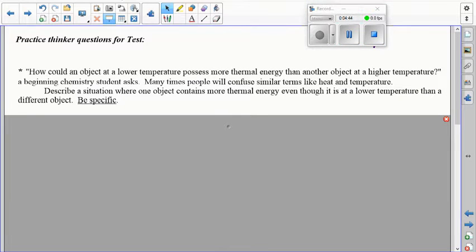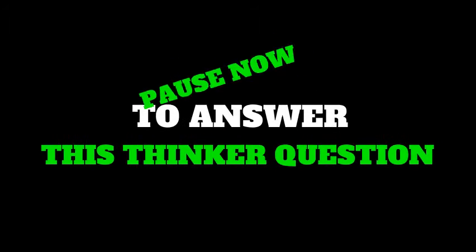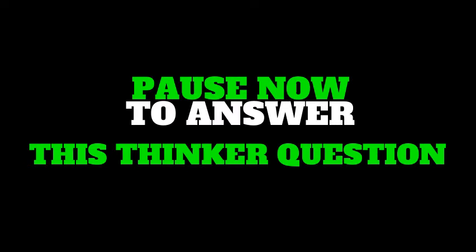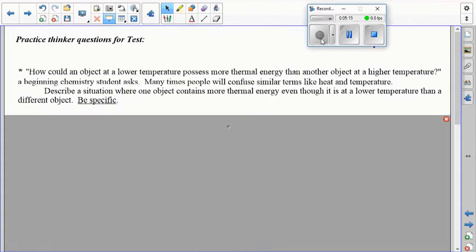A new chemistry student is like, how can an object at a lower temperature possess more thermal energy than an object at a higher temperature? Many times people confuse similar terms like heat and temperature. You very well may have been this person a few weeks ago when we started this unit. Describe a situation where one object contains more thermal energy even though it's at a lower temperature. You have 90 seconds to give me a situation where this could be the case. Oftentimes, numbers can be the most persuasive way to show Mr. Pilcher you know what you know.